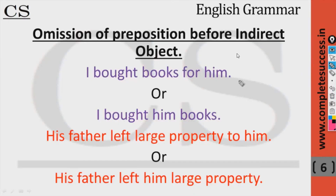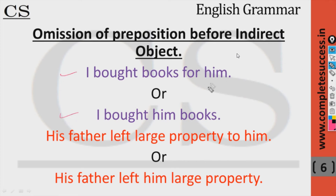Which is correct: 'I bought book for him' or 'I bought him books'? Both are correct. 'Bought what?' — books. 'For whom?' — for him. So we can also say 'I bought him books.' This is the omission of preposition before the indirect object — we can omit the preposition before the indirect object if we write the indirect object before the direct object.